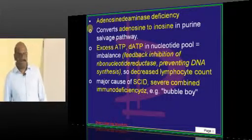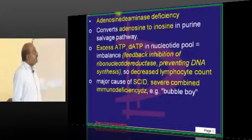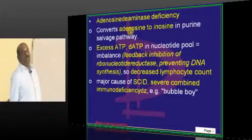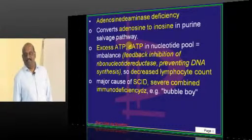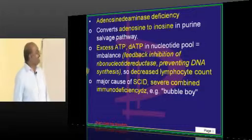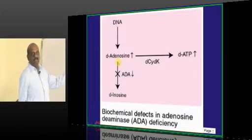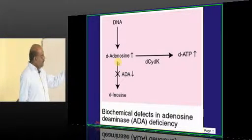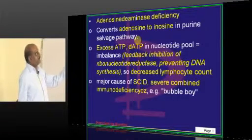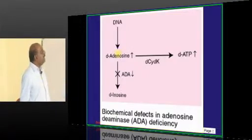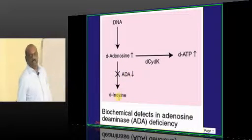Adenosine deaminase deficiency. Where is adenosine deaminase involved? In the purine salvage pathway, adenosine is converted to inosine, and for this conversion you require adenosine deaminase.